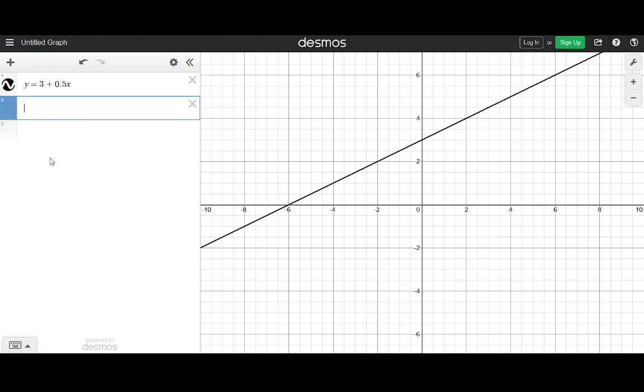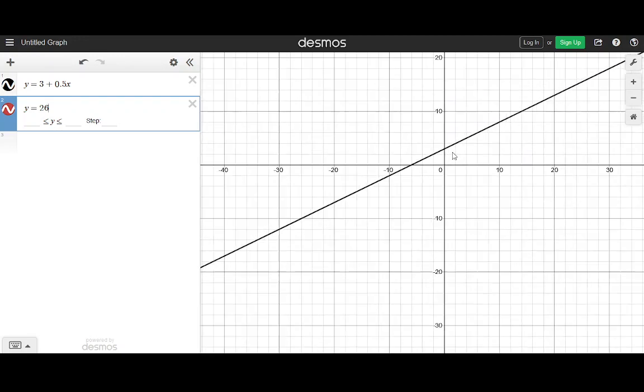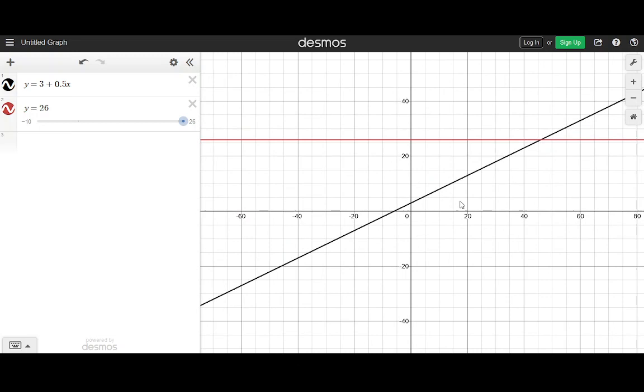And then we wanted to see where this intersected the horizontal line y equals 26. Now notice that we don't see that in the graph because we're too zoomed in. So if I move over the graph and use the mouse wheel, I can scroll to zoom out and then click and drag to move it around. You can also use the plus and minus buttons up here on the right to zoom in and out.